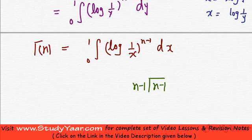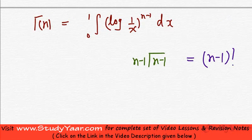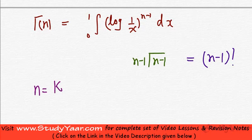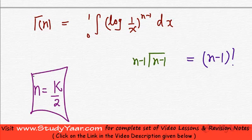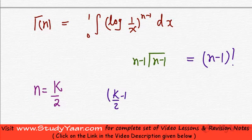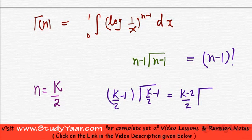If n is an integer, it is going to be equal to n minus 1 factorial. And if n is of type k by 2, then let us see what happens. When n is equal to k by 2, you have k by 2 minus 1 and gamma of k by 2 minus 1. So, this is equal to k minus 2 upon 2 gamma k minus 2 upon 2.